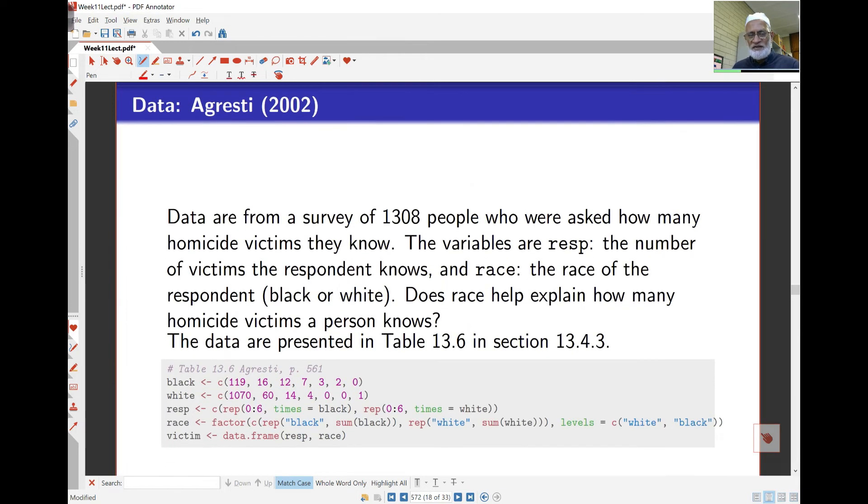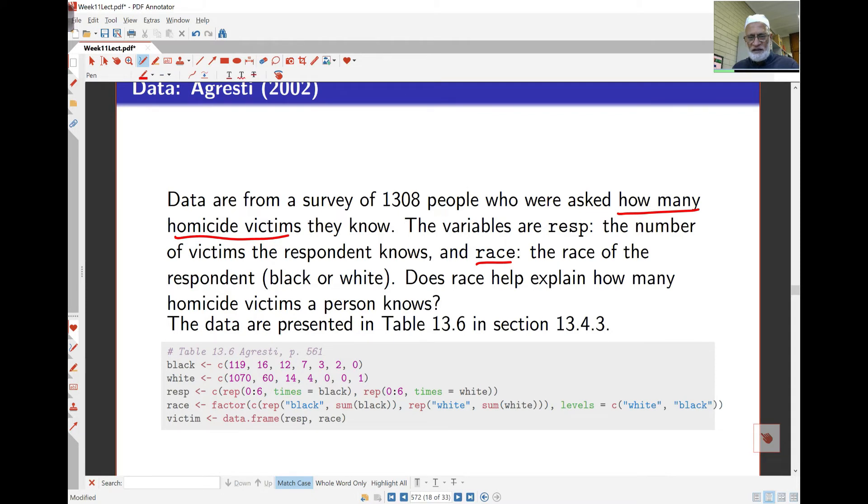Here is data from Agresti's book. Data were taken from a survey of 1308 people who were asked how many homicide victims do you know, and the question here was whether the race of the person affects the number of homicide victims they knew. So here's the data. It came in a table form in the book and we've just put this together in the data frame. So we've got the number of blacks, number of whites in the data set, and we've got the respondents where there is the number of victims they knew.